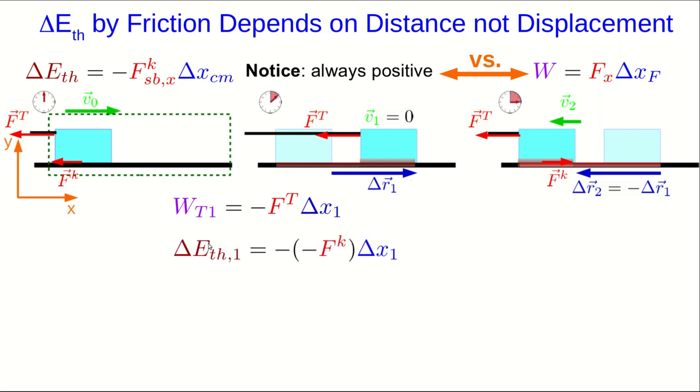Now the thermal energy, we again have negative the x component of the friction, which is negative fk times delta x1, and those negative signs cancel. And so we get a positive answer as promised.